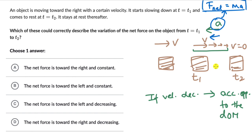We don't know exactly what that force is — it could be friction, air resistance, or someone pushing the block in the opposite direction. That's not relevant. What matters is the variation of the net force. Since the block is slowing down, there must be a net force to the left, which could be option B or option C. Option B says net force is to the left and constant; option C says net force is to the left and decreasing.